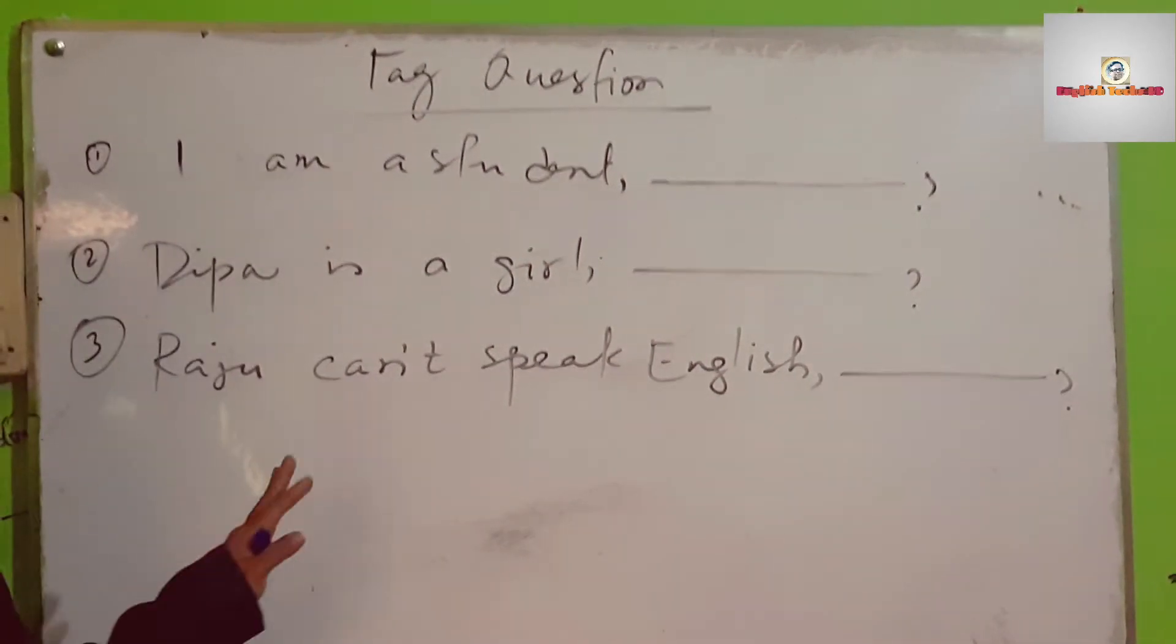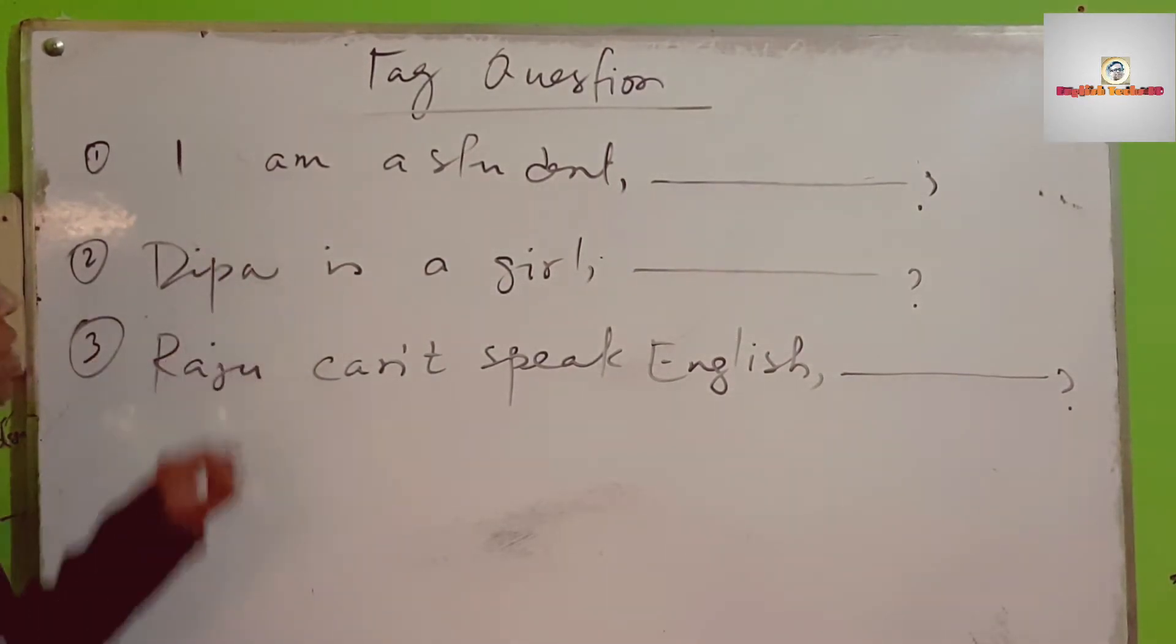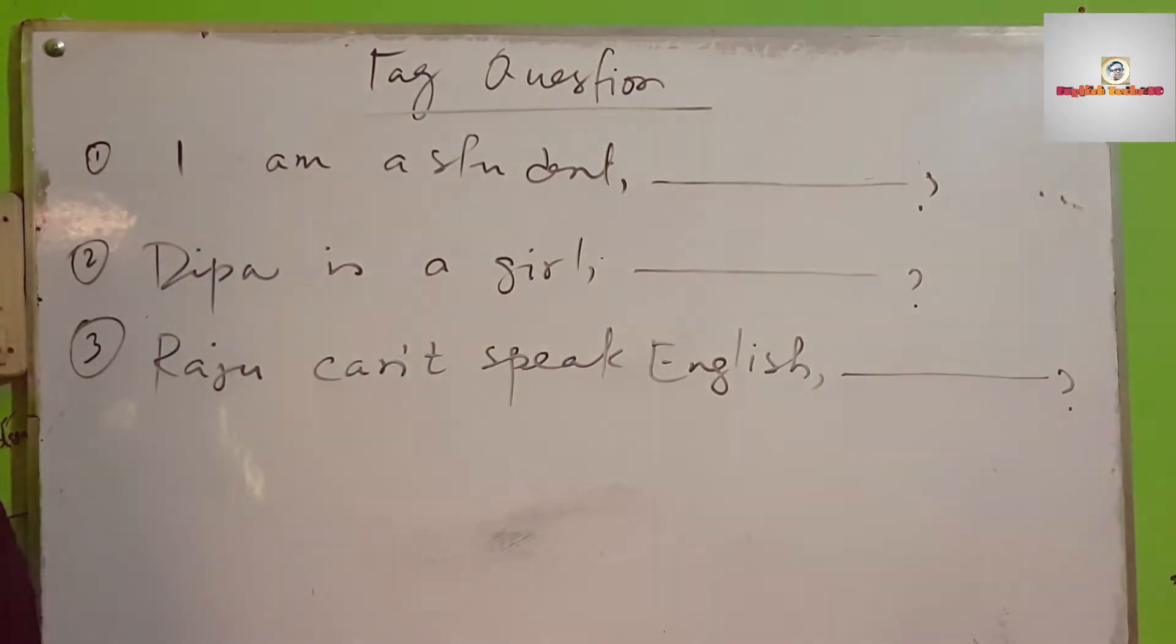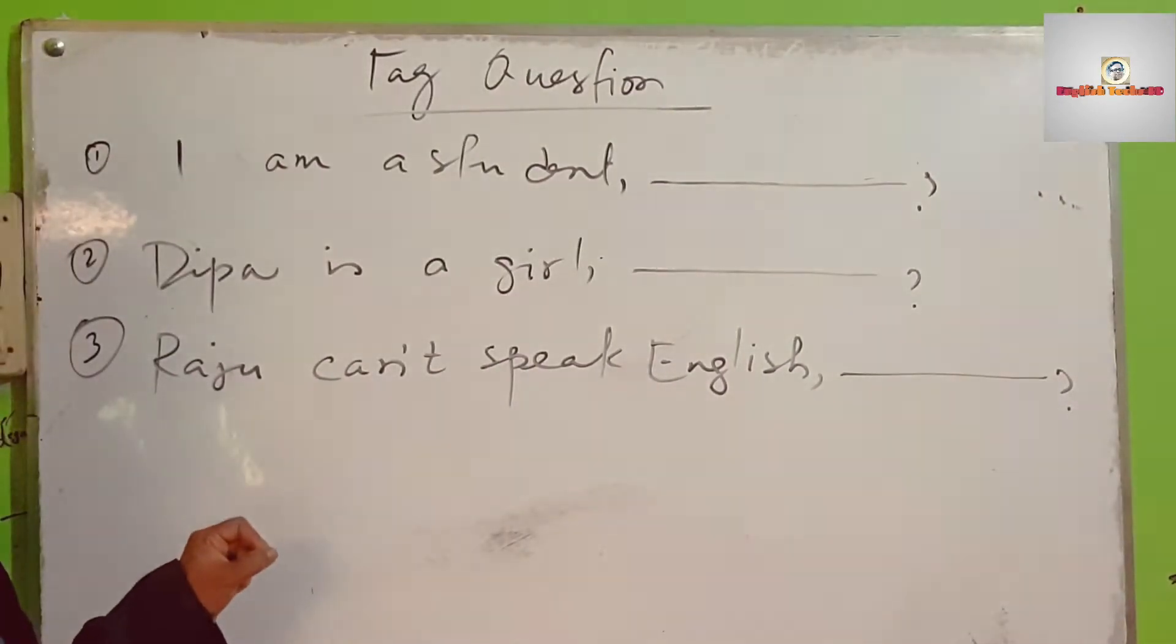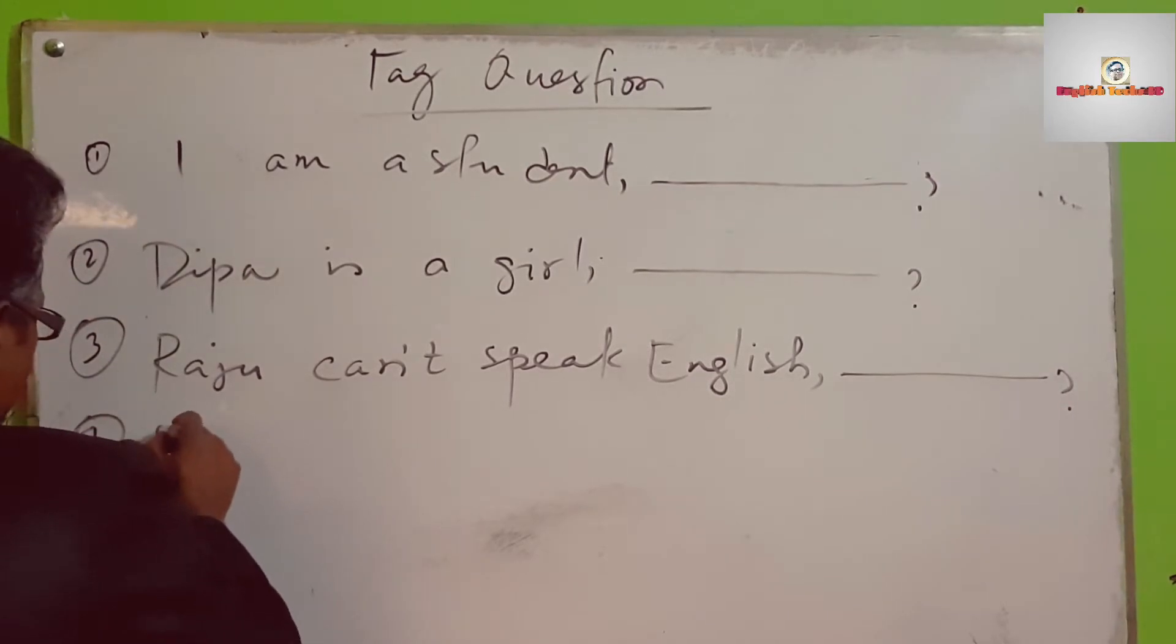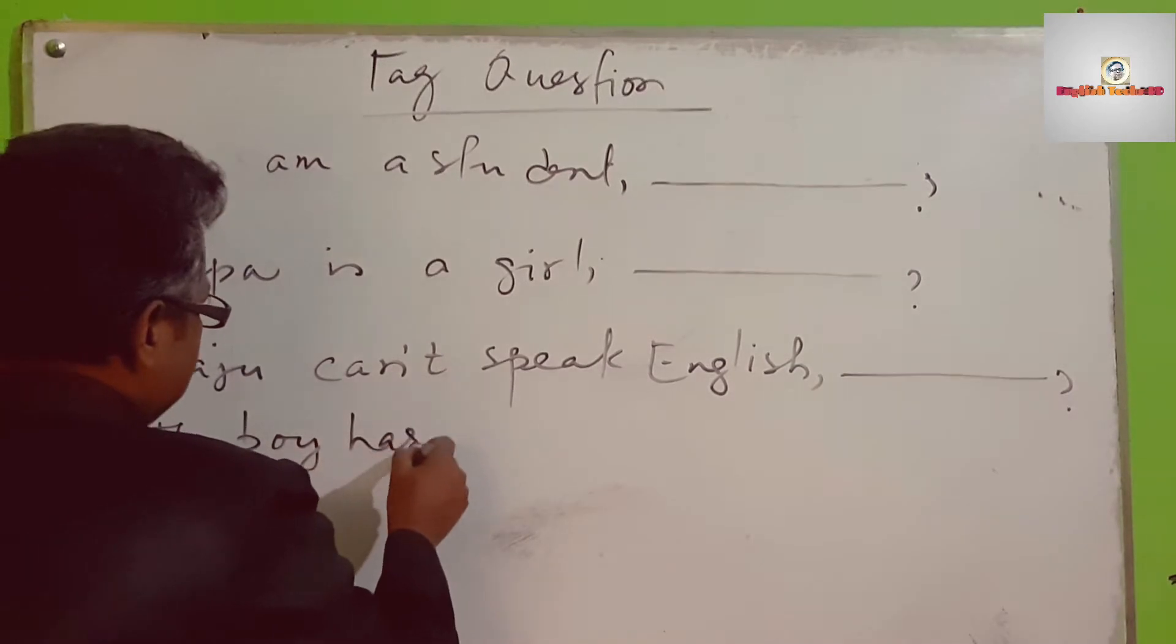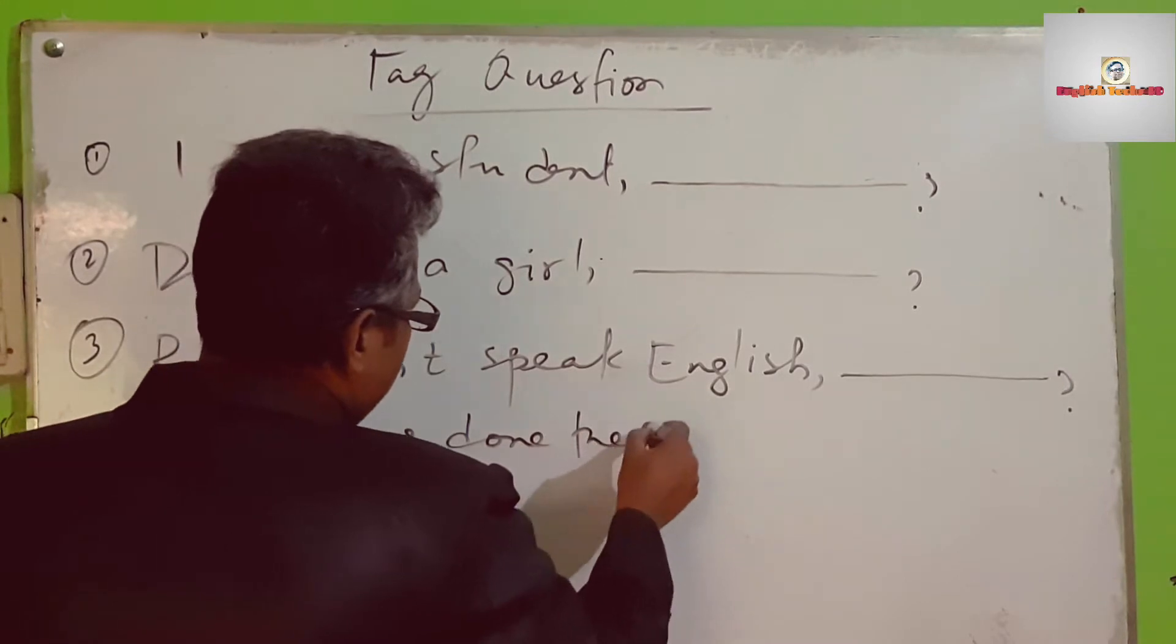This is actually the first part. This part will work with auxiliary verb. This is the first step of learning tag question. The boy has done the work.